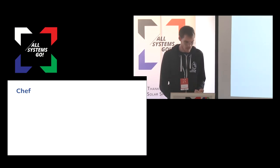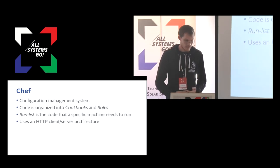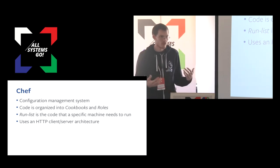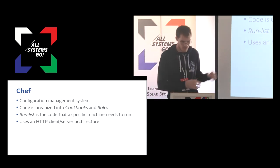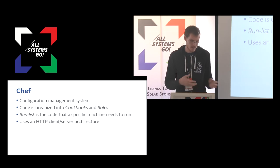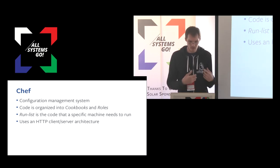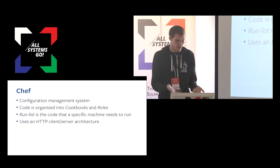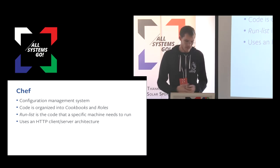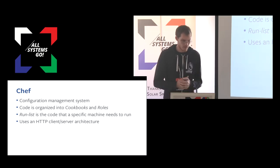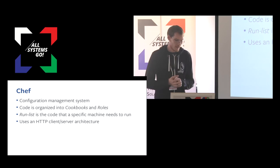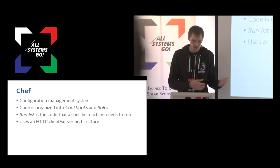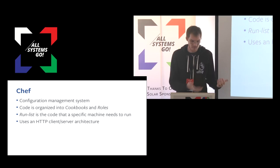As a quick background, Chef is a configuration management system. There have been a few talks about Chef already, so I'm not going to go into too much detail. Chef code is organized into cookbooks and roles. A cookbook is something you use to install a particular thing like Apache. A role you can use to group cookbooks together. And the run list is the entry point for a Chef run — you would use this to configure a LAMP environment on a machine.